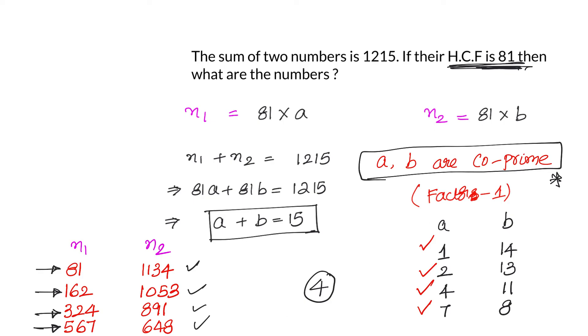Now in that scenario we have only 4 options. For the 4 options we got the a and b values. Multiply with 81 we can get the different combinations of numbers which will satisfy these 2 conditions: that sum of 2 numbers is 1215, and their HCF is 81. So the numbers are: first scenario 81, 1134; second scenario 162, 1053; another pair can be 324, 891; and the last one is 567, 648.